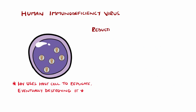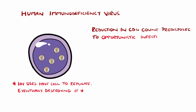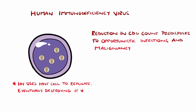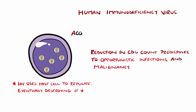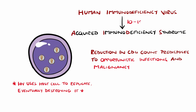Over time, as more cells are affected, the immune system is slowly eroded, eventually culminating in the inability to fight off opportunistic infections and increased susceptibility to cancer. This constellation of signs and symptoms is called AIDS, which takes roughly 10-15 years to develop from initial infection on average.